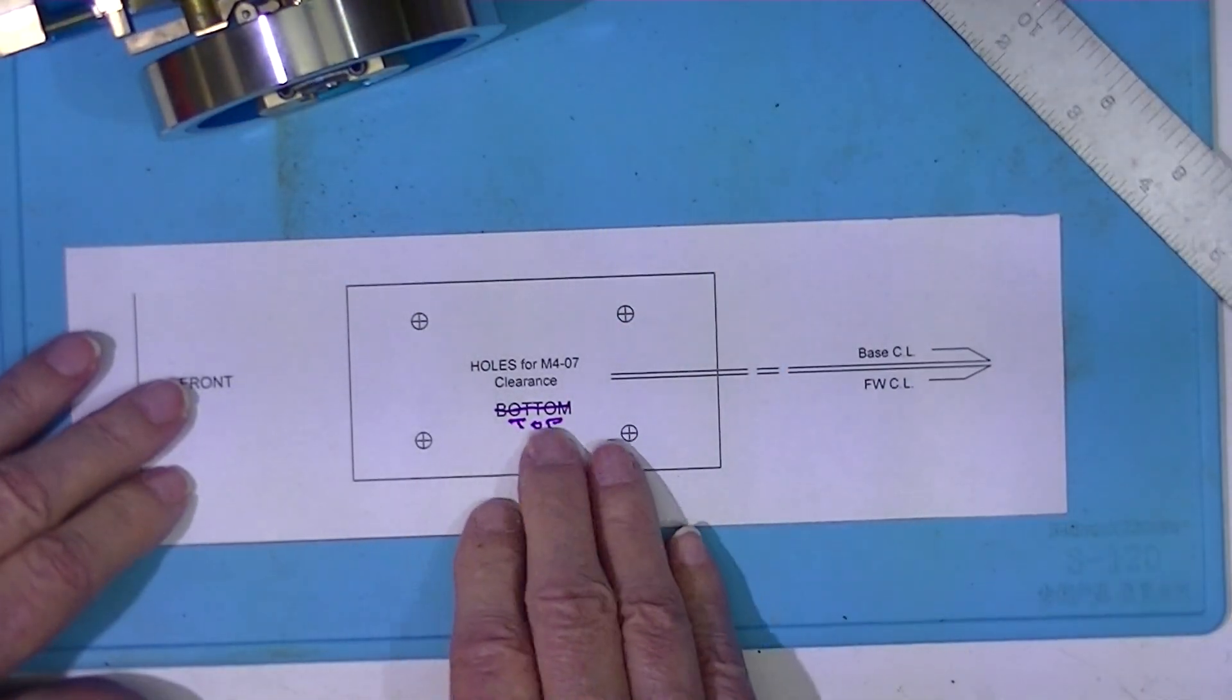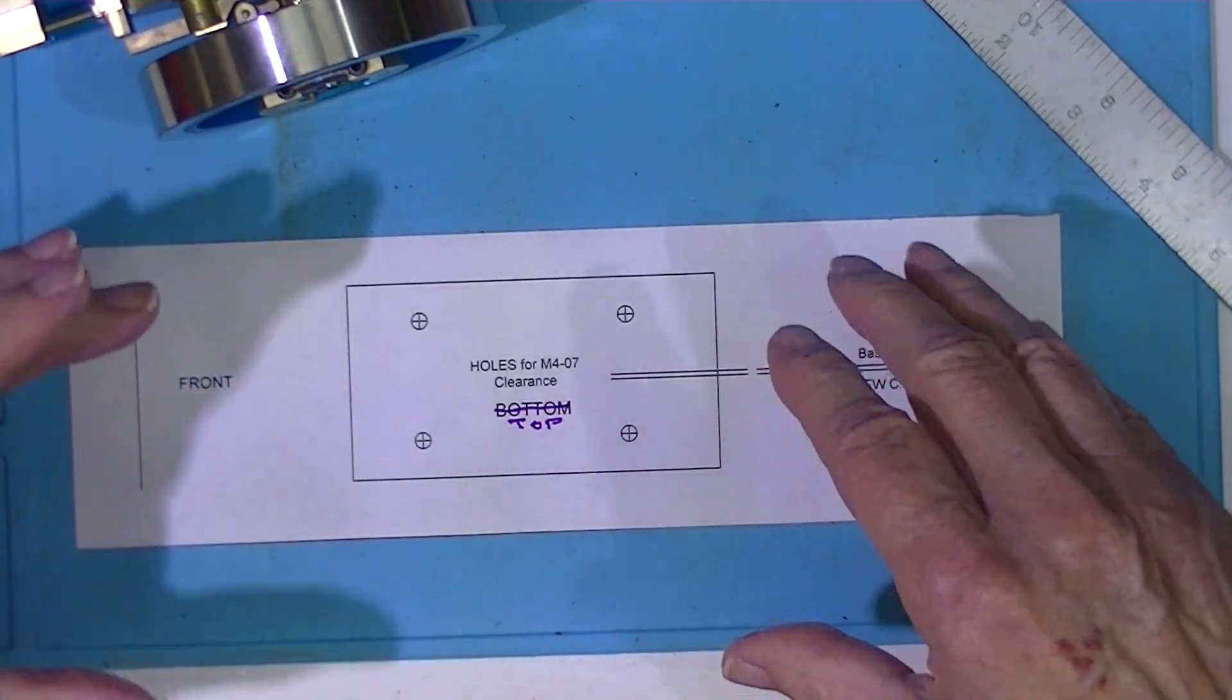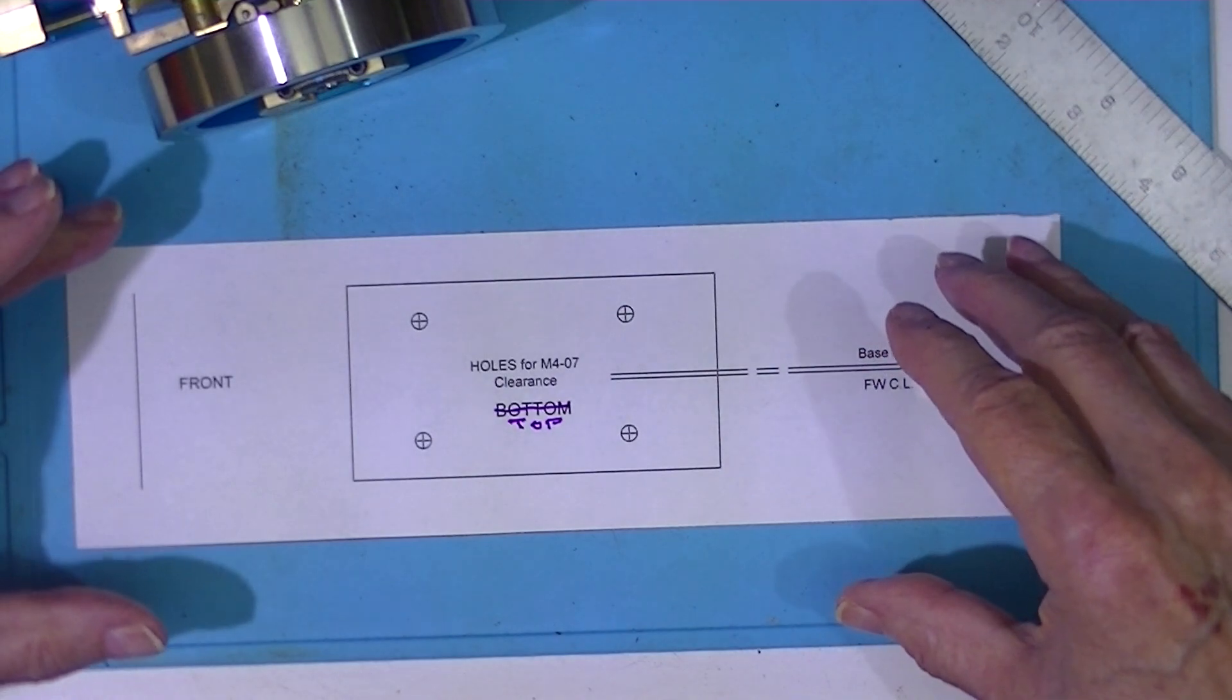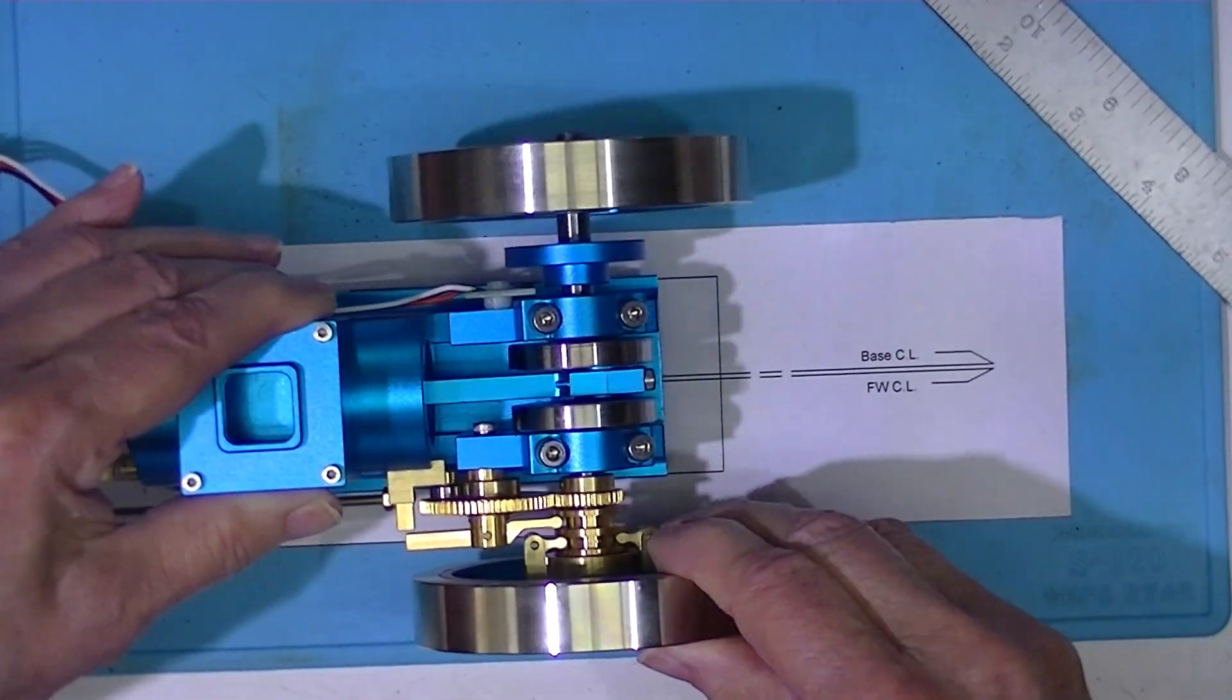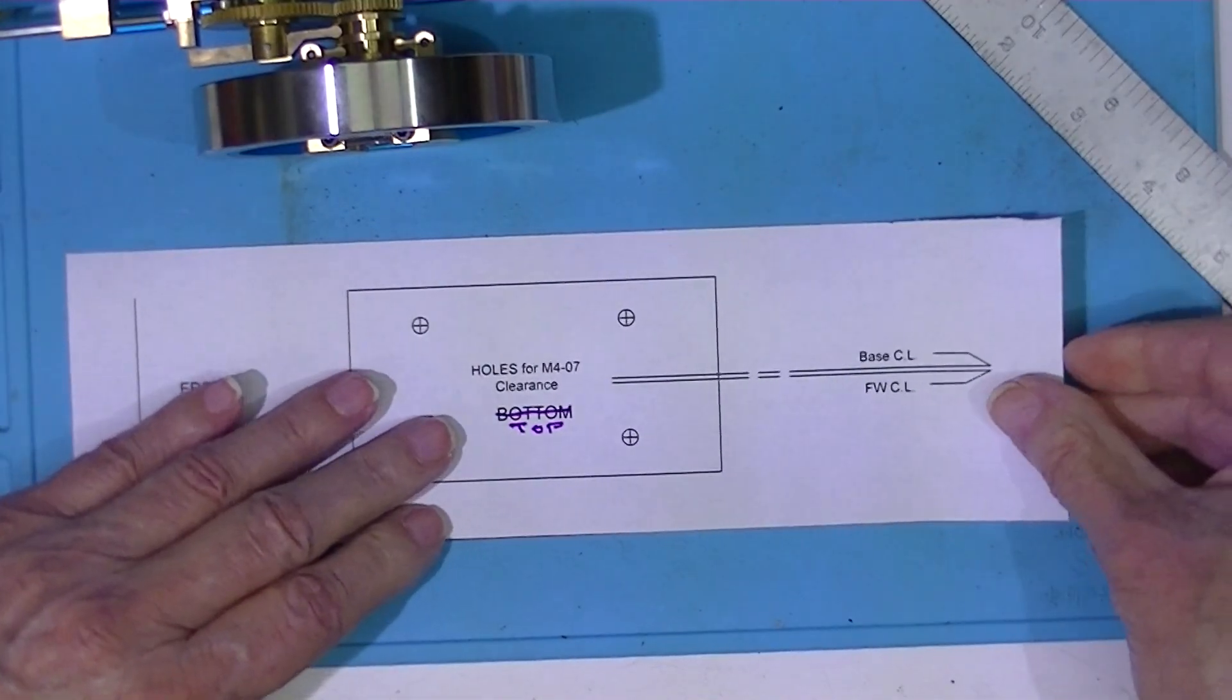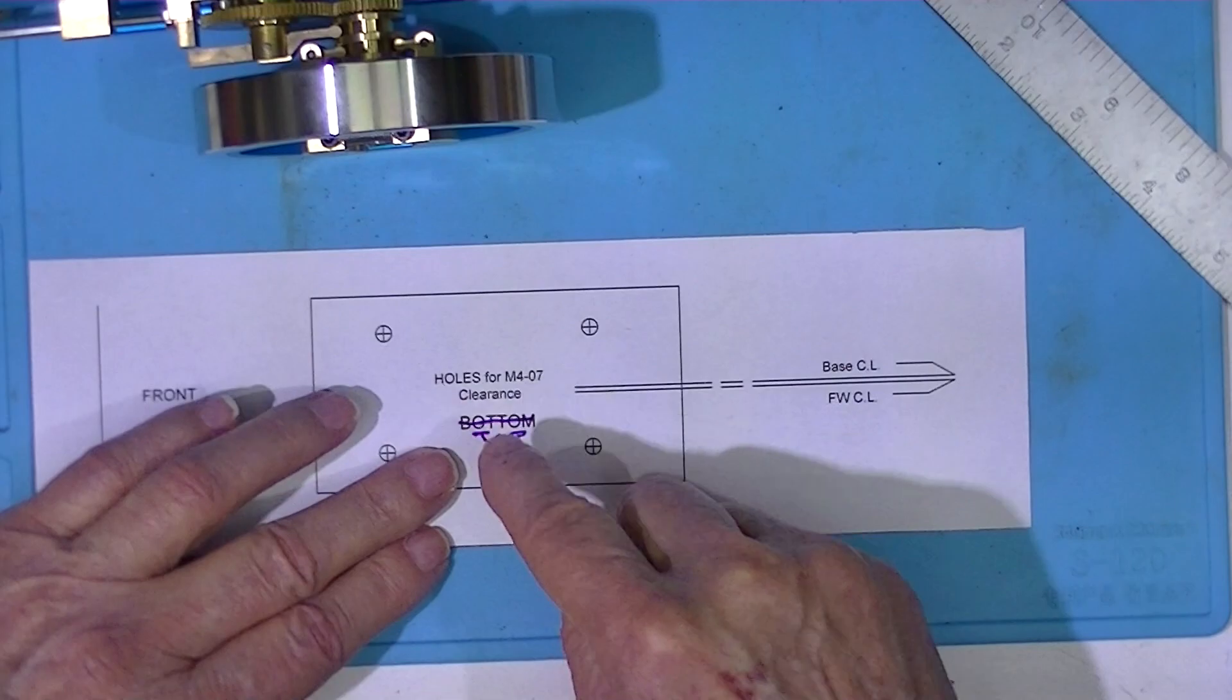Actually, I drew the bottom up then I flopped it over so I was looking at the top view of the base. So I'll put this template on the aluminum channel, move the engine to a suitable location, and then center punch these holes.